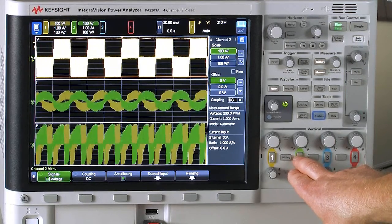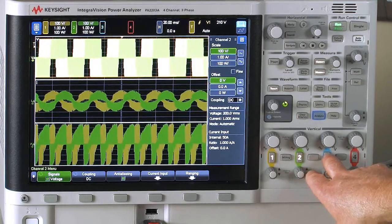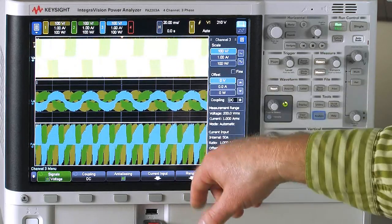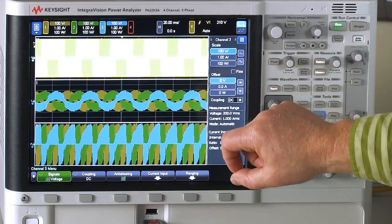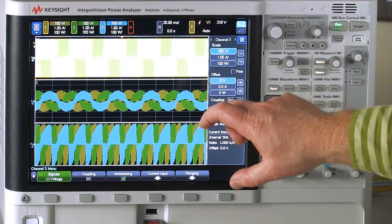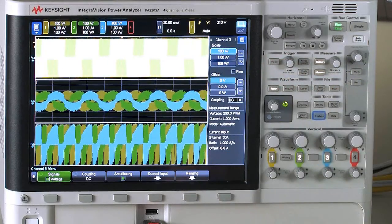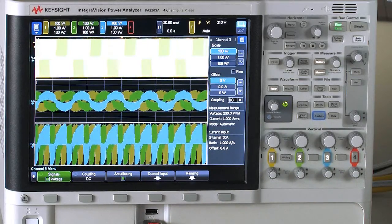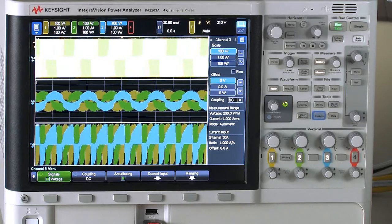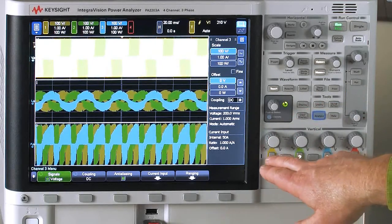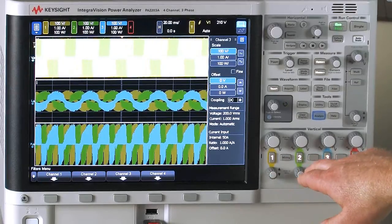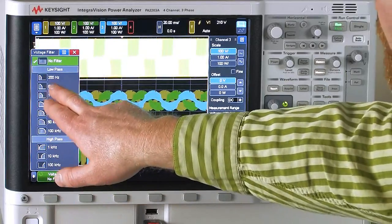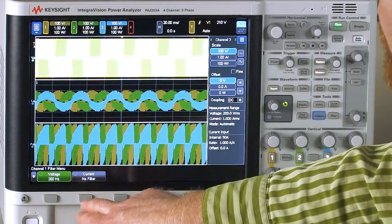And then I can zoom out and look at all of the channels here. So channel two is phase two or U, and channel three is phase three or W. So I'm measuring directly across each one of those delta configuration legs, and I'm measuring the current going into it. You can see the current's somewhat sinusoidal.